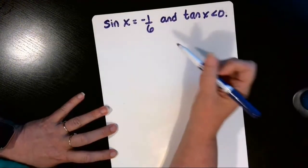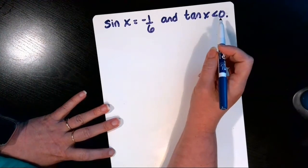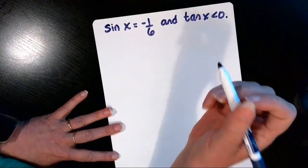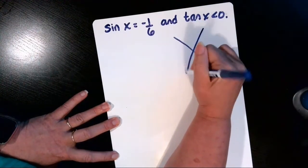Okay, if we're given that sine of x is negative 1/6 and the tangent of x is less than 0, then we want to find all the remaining trig functions. We're going to need to start with our trig identities hexagon.